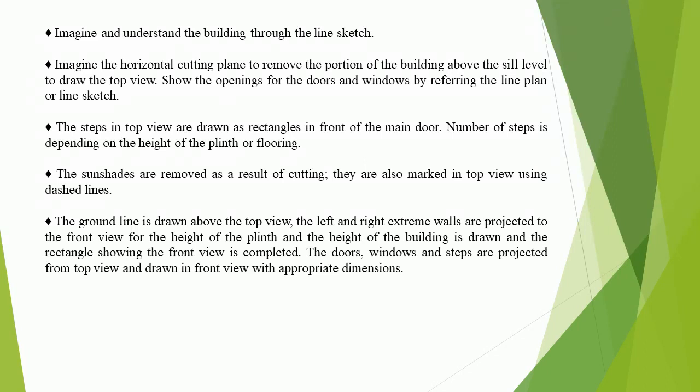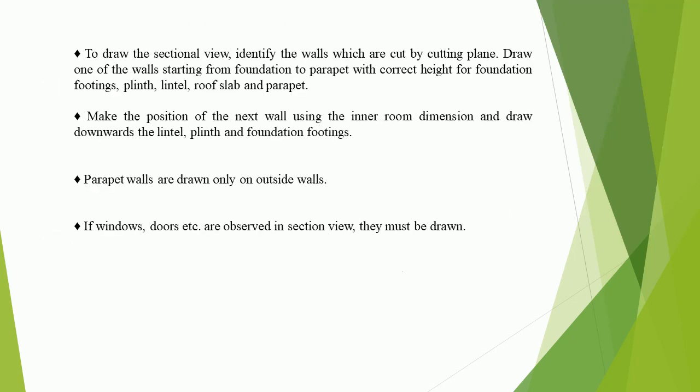The ground line is drawn above the top view. The left and right extreme walls are projected to the front view for the height of the plinth, and the height of the building is drawn and the rectangle showing the front view is completed. The doors, windows and steps are projected from the top view and drawn in front view with appropriate dimensions. To draw the sectional view, identify the walls which are cut by the cutting plane. Draw one of the walls starting from foundation to parapet with correct height for foundation footings, plinth, lintel, roof slab, and parapet.